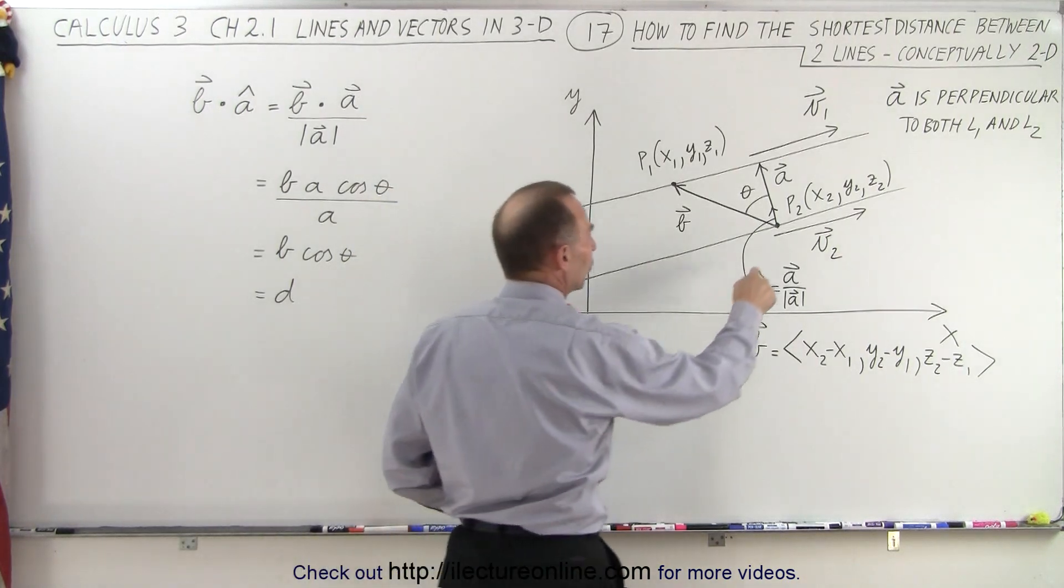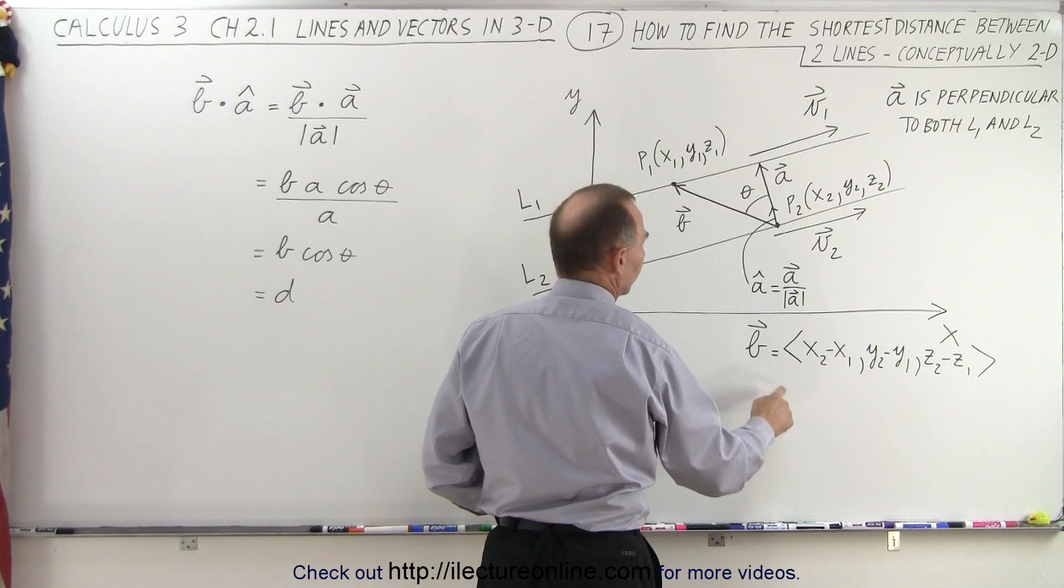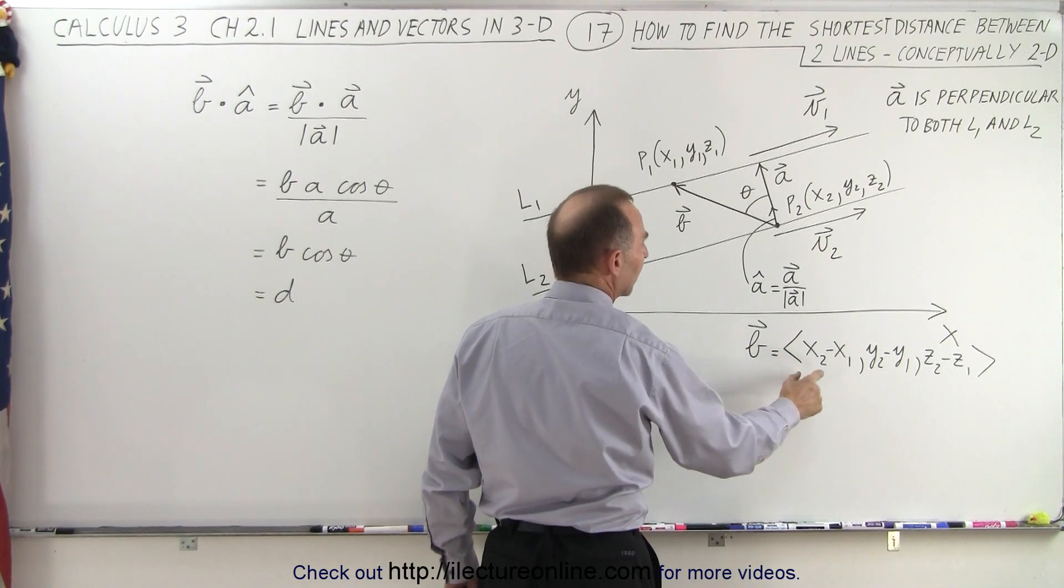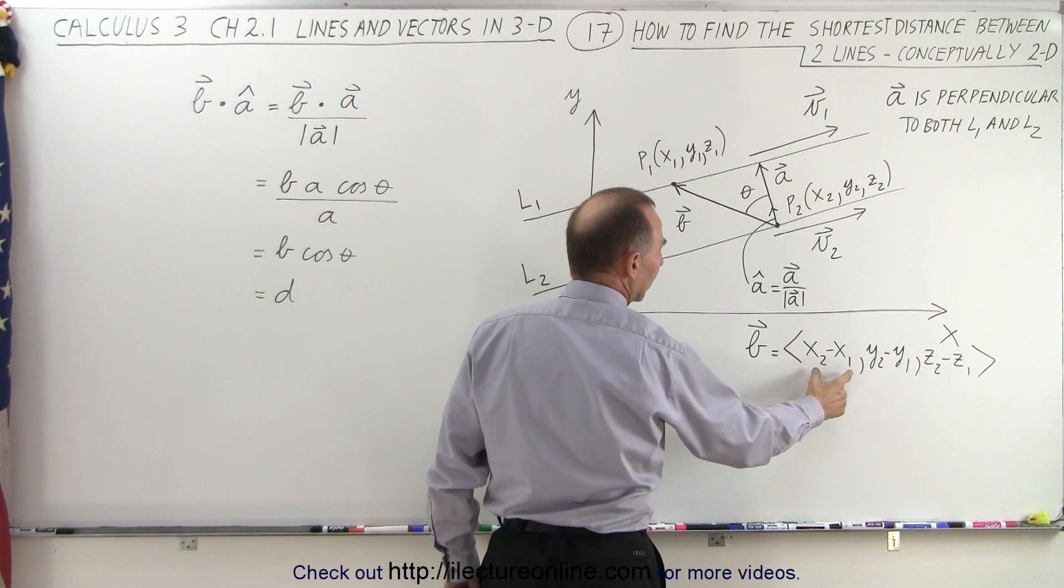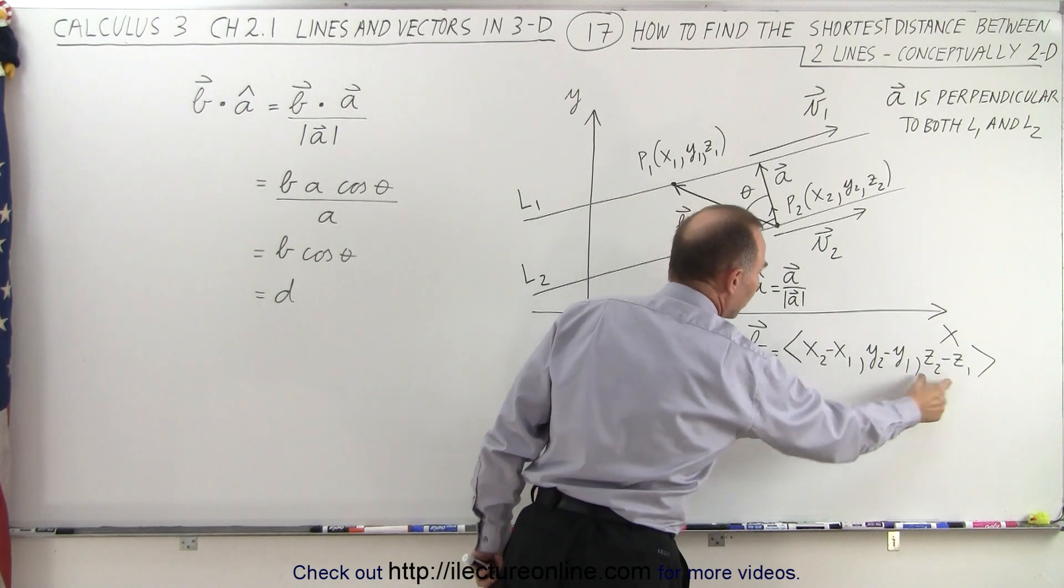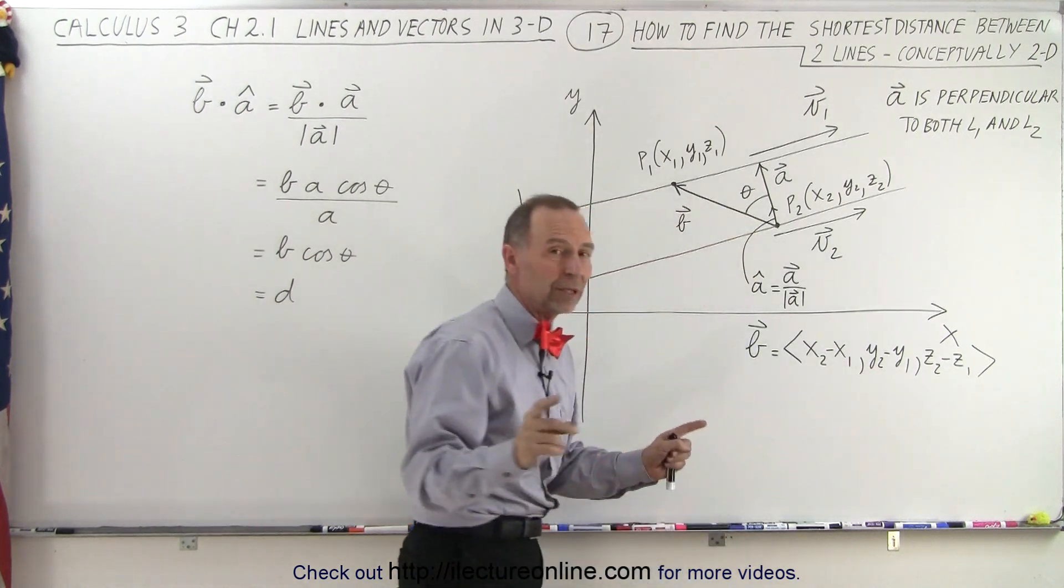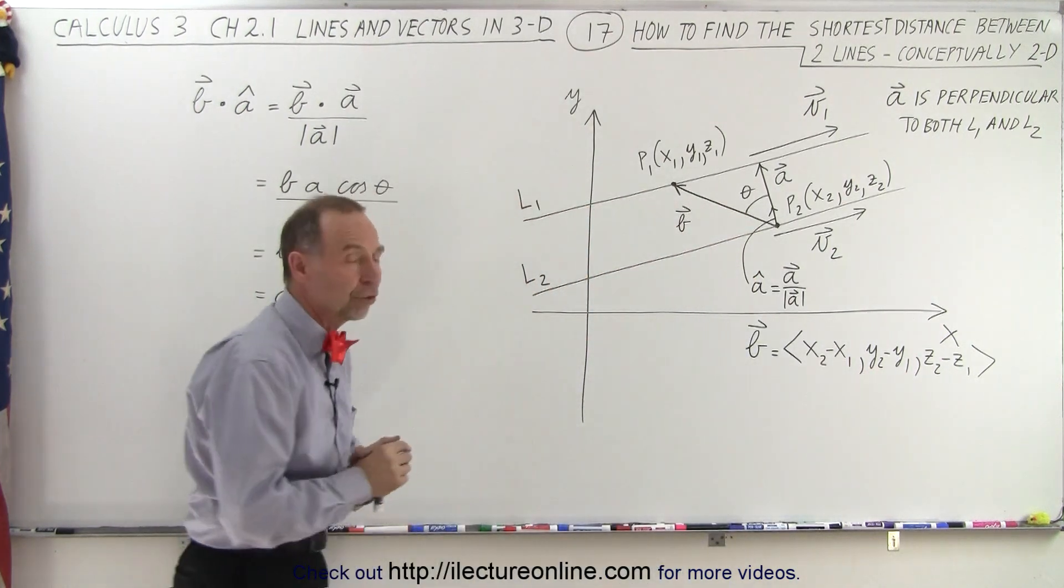We also need a second vector, vector B, which connects the two points that are given to us. So we can define vector B as being the X component, the Y component, and the Z component, by taking the difference between the X, Y, and Z coordinates of the two points.